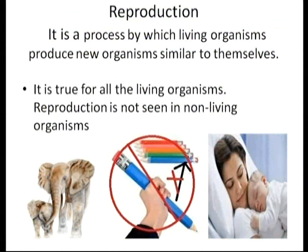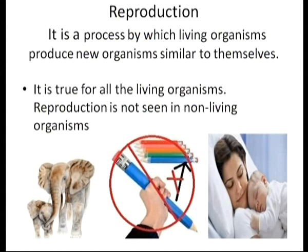The next important feature of living organisms is reproduction. Reproduction is a process by which living organisms produce new organisms similar to themselves — an elephant gives birth to an elephant baby, and human beings give birth to humans. Reproduction is not seen in non-living organisms, and it is true for all living organisms.